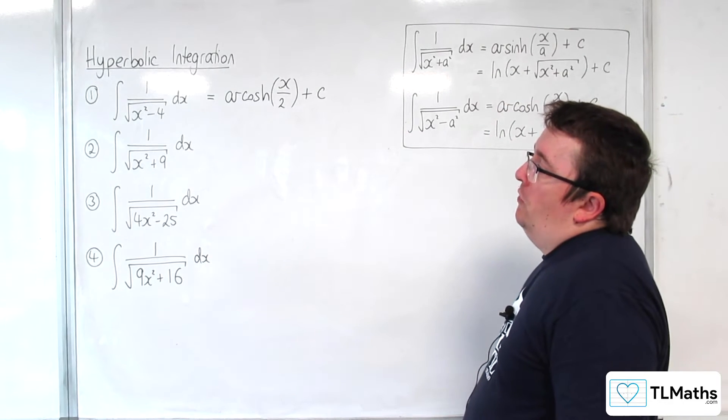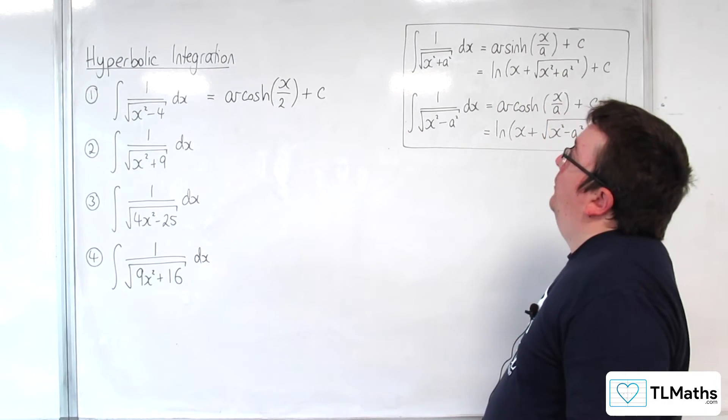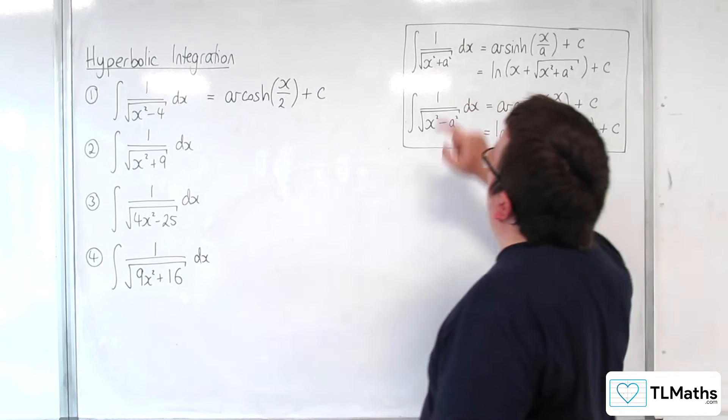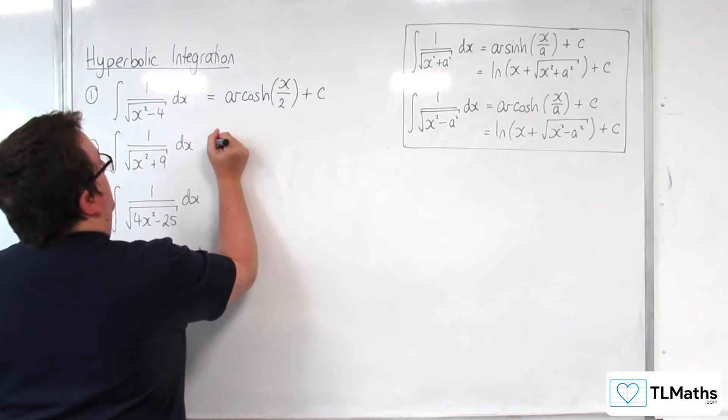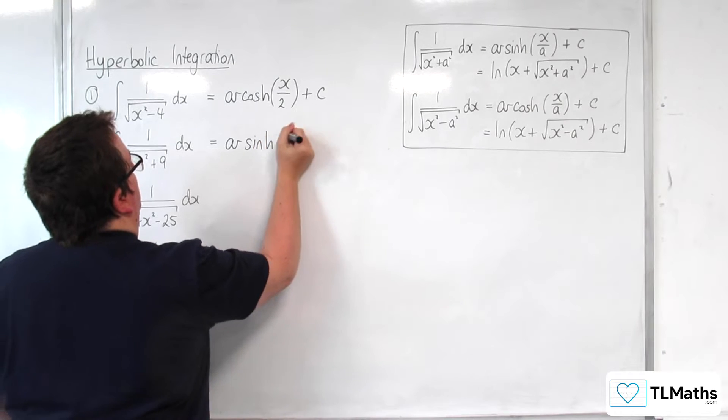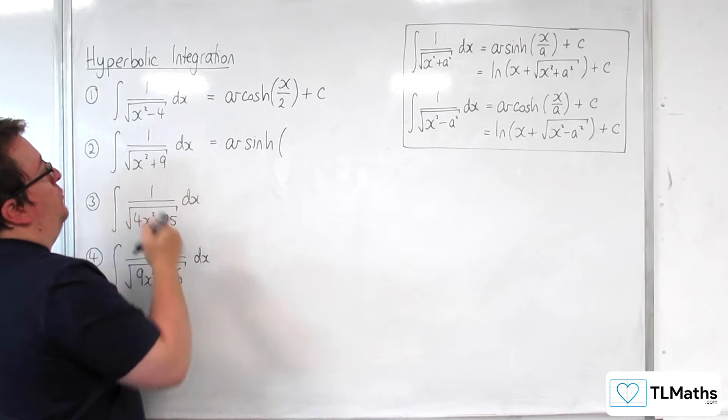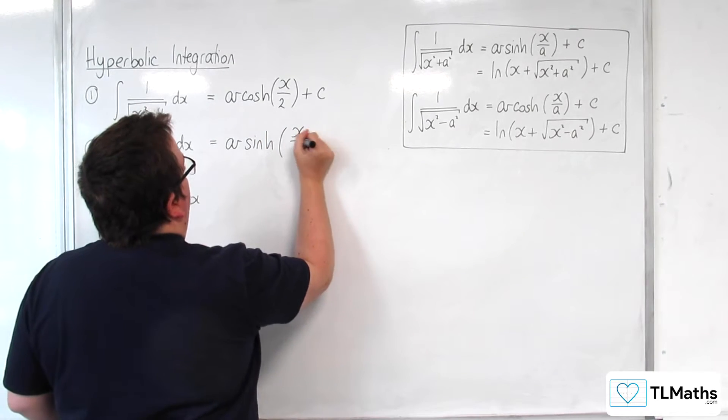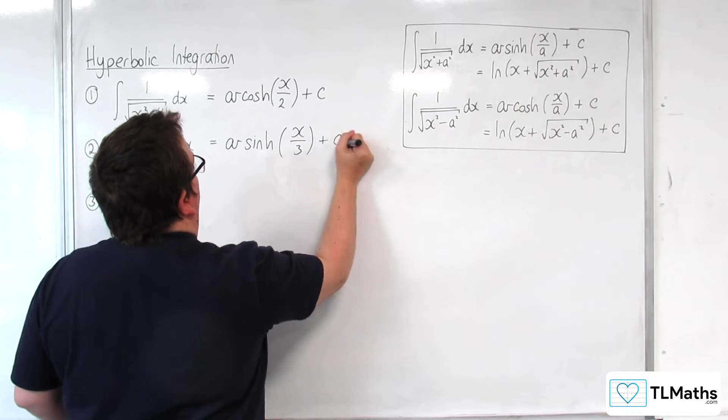Second one, the integral of 1 over the square root of x squared plus 9. So that's of this form here. And so this would be arsinh where a is 3, so x over 3 plus some constant c.